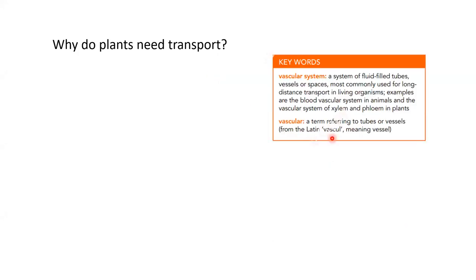We need to understand that a vascular system is not limited to animals only — it can be present in plants and different organisms. In plants, we're essentially talking about the vascular systems, which are the xylem and the phloem. Because you already know what the xylem and phloem are, we just need a little bit of detail. I'll save the full details for the drawing and understanding sections, which is the practical portion of this topic.